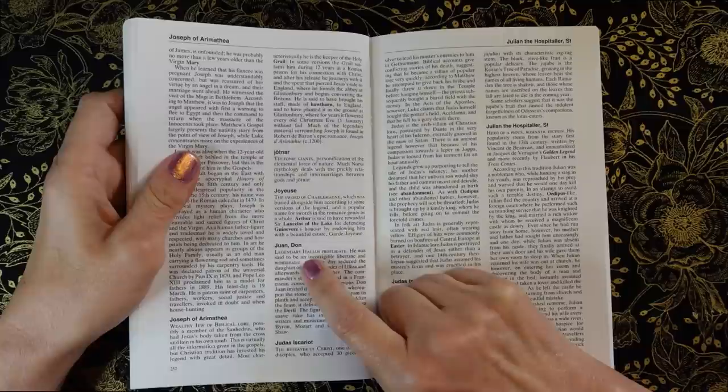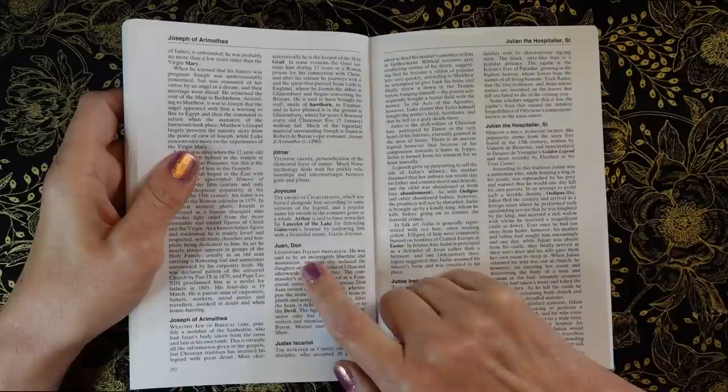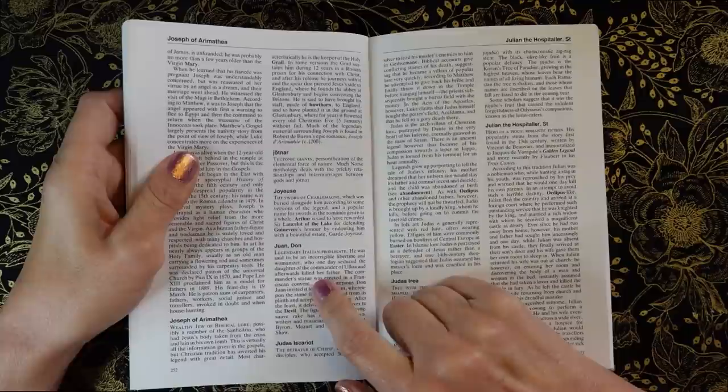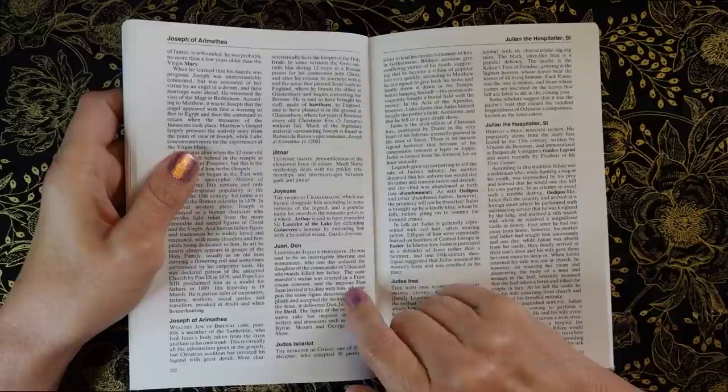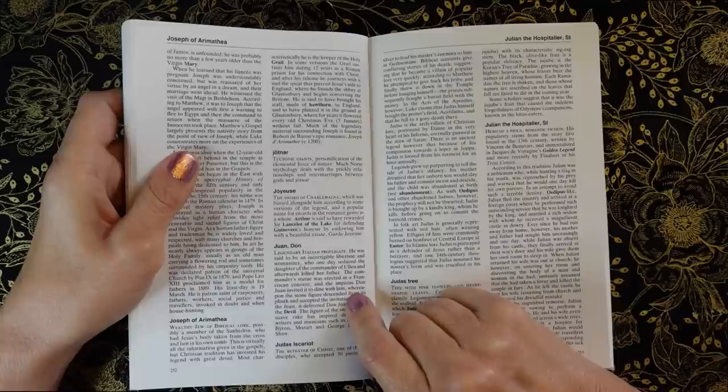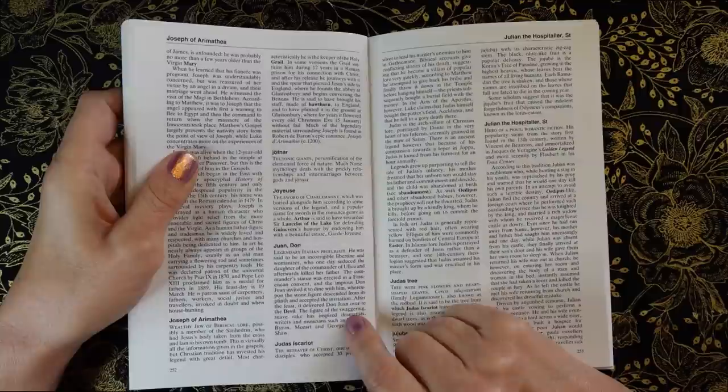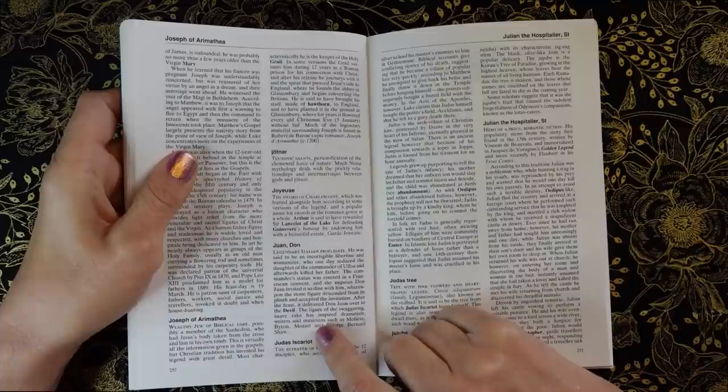Don Juan, legendary Italian profligate, he was said to be an incorrigible libertine and womanizer. He one day seduced the daughter of the commander of Ulloa and afterwards killed her father. The commander's statue was erected in a Franciscan convent, and the impious Don Juan invited it to dine with him, whereupon the stone figure descended from its plinth and accepted the invitation. After the feast, it delivered Don Juan over to the devil. The figure of the swaggering, suave rake has inspired dramatists, writers and musicians such as Molière, Byron, Mozart and George Bernard Shaw.